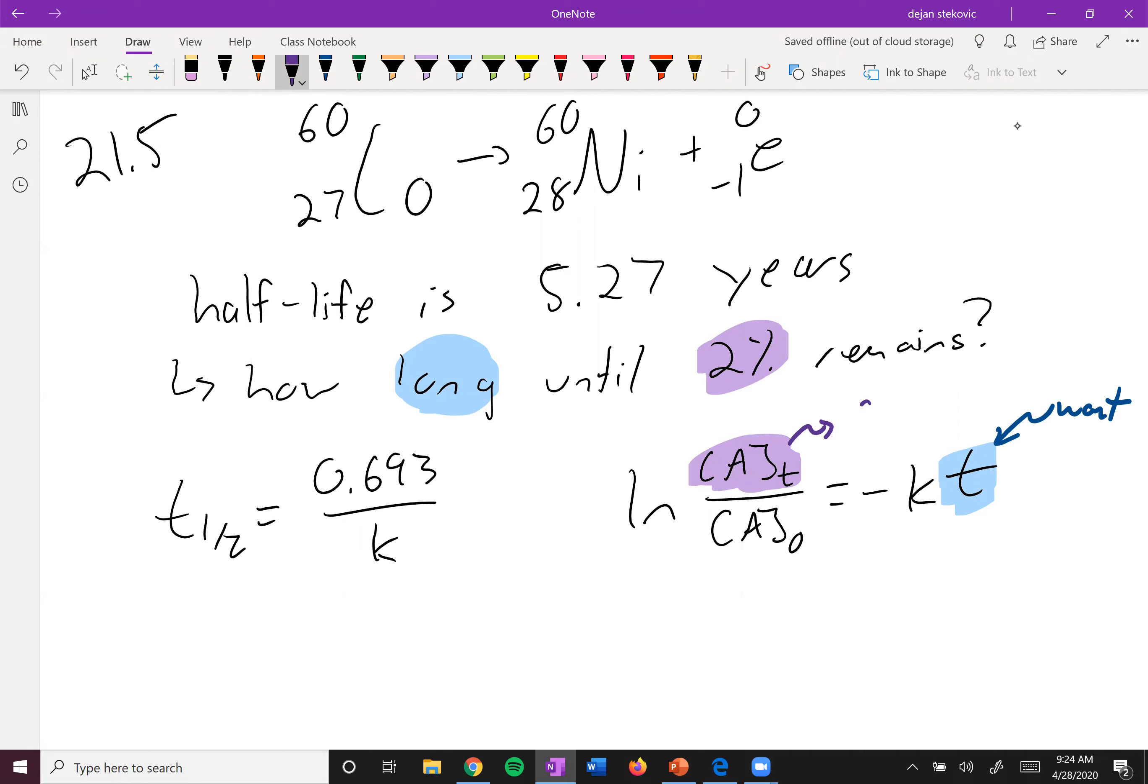We're going to change the percent to a decimal, so 0.02. For the original concentration, if 2% remains, that means originally 100% was there, which as a decimal is 1. We still don't have k, so we still need to solve for k.